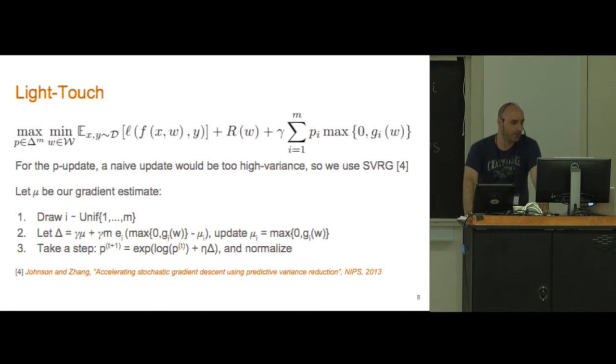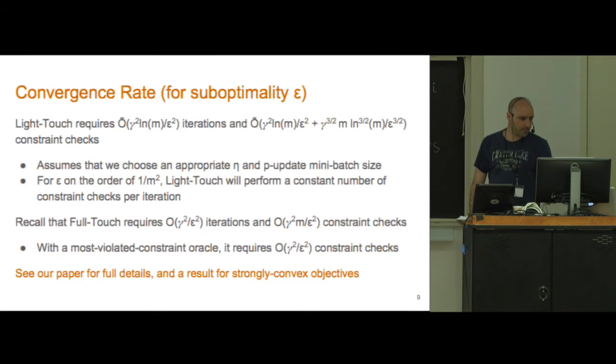We're going to say that our estimate mu has an inside component mu_i, the magnitude of the constraint violation the last time we looked at it. We're just going to remember that, and every time we check a new constraint we're going to remember it for next time.